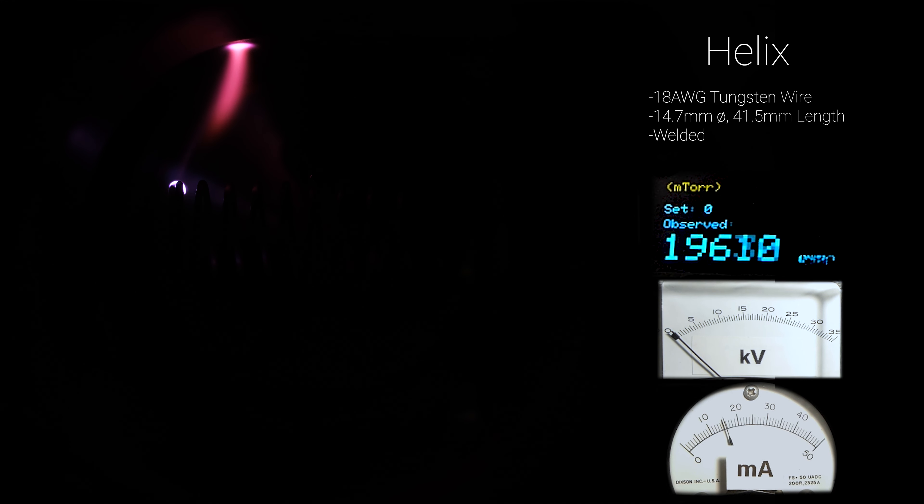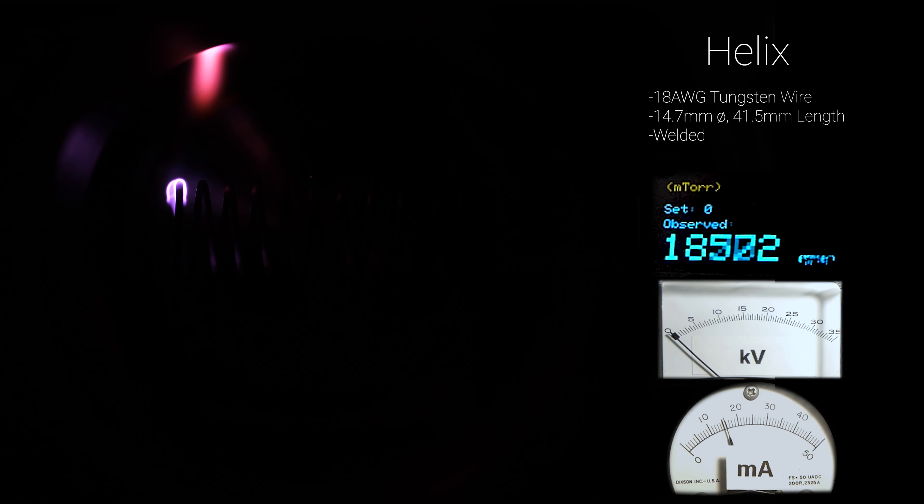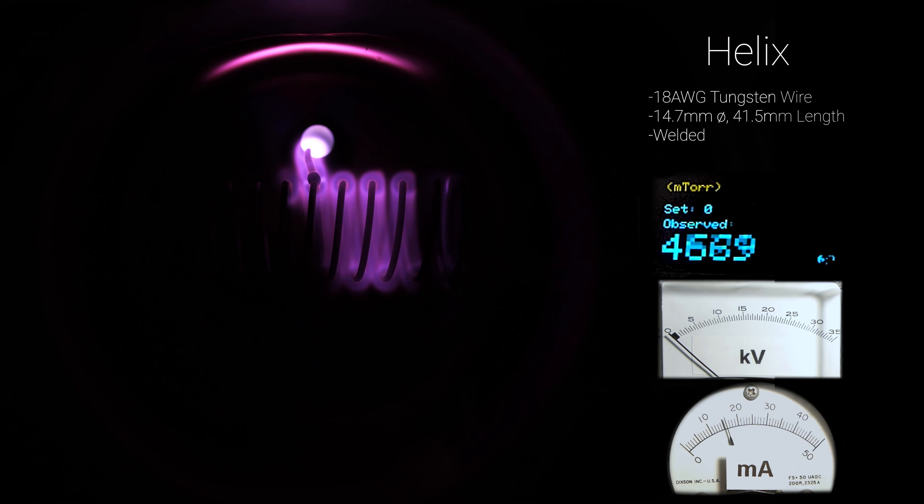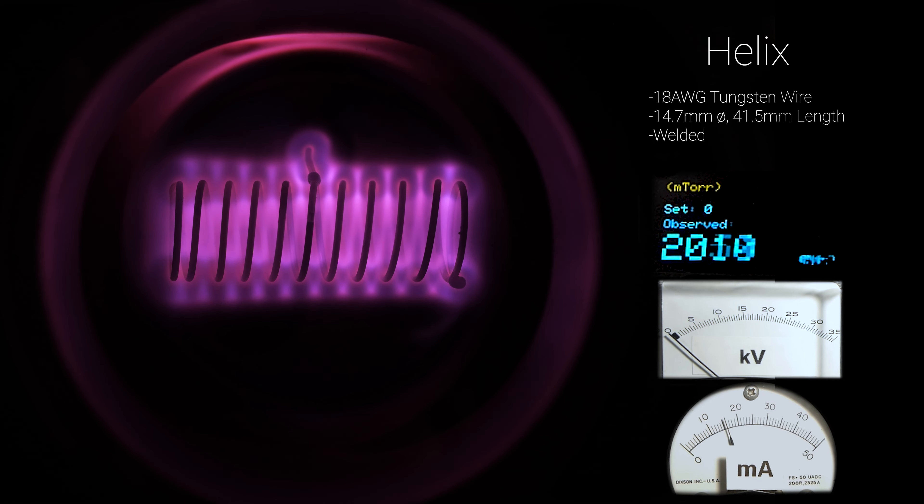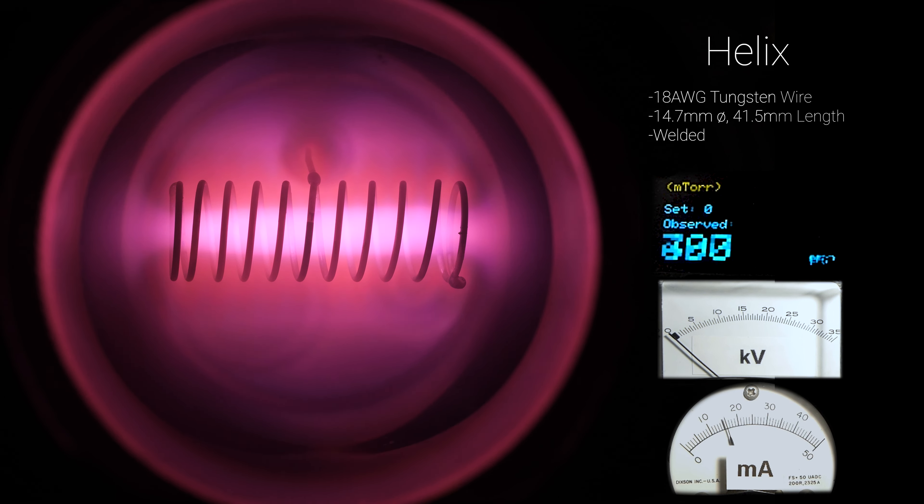Moving on to the helical grid, it starts as a glow discharge similar to that of the ring-shaped grid. A helix is essentially the same concept as a ring, only consisting of many rings all aligned on the horizontal axis of the vacuum chamber. The additional rings dramatically improve the grid's ability to focus the plasma. As we can see, it's noticeably more concentrated within the center of the helix.